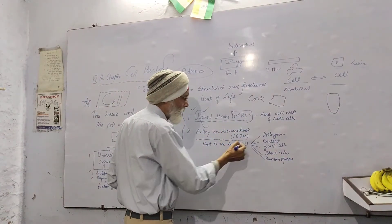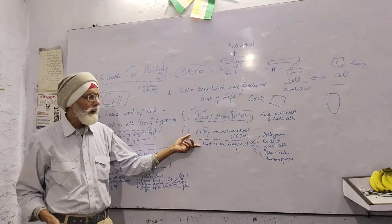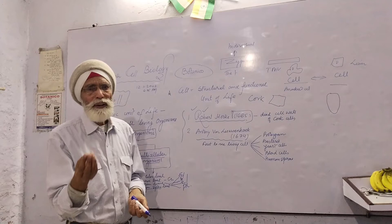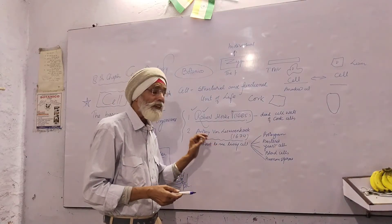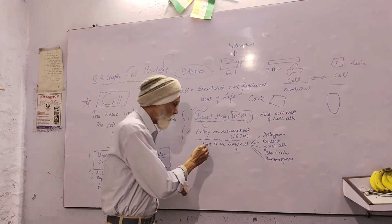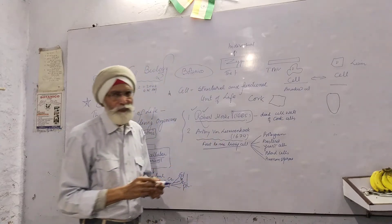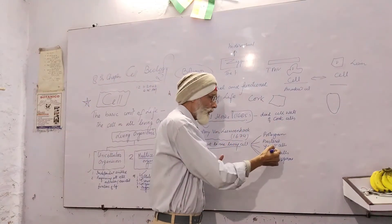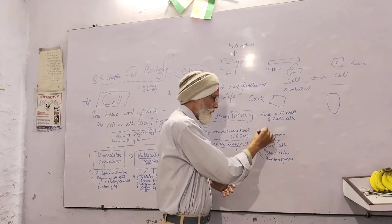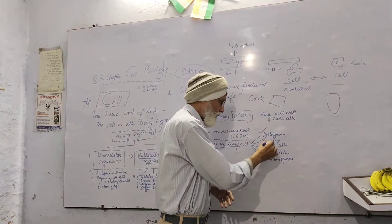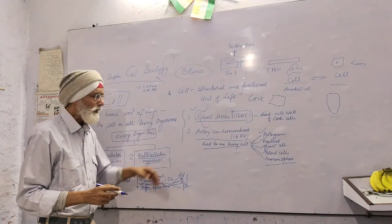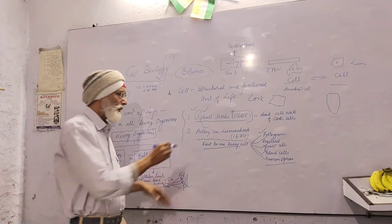After that, nearly nine years later, another very important scientist who had an advanced type of microscope, a simple microscope, called Anton van Leeuwenhoek, was the first scientist to observe living organisms. What living organisms did he discover? They were protozoa, bacteria, yeast, blood cells, and human sperm. We can say that the beginning of cell biology started from these two scientists: Robert Hooke and Anton van Leeuwenhoek.